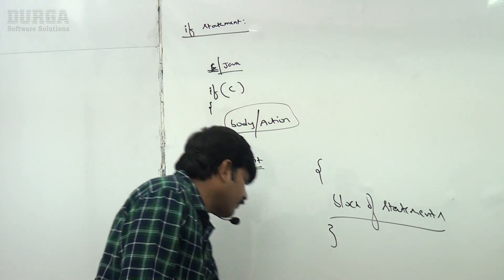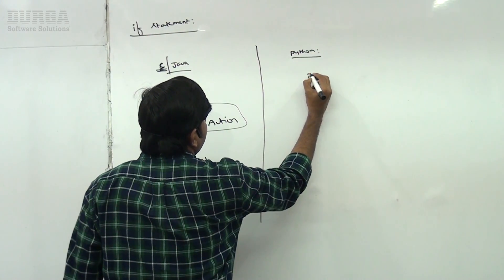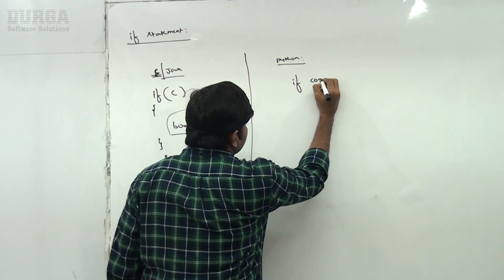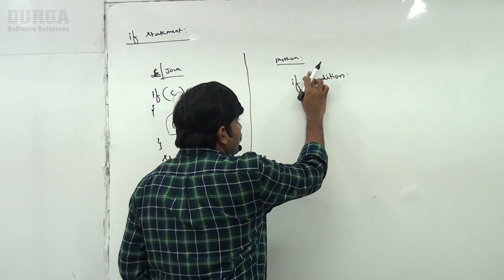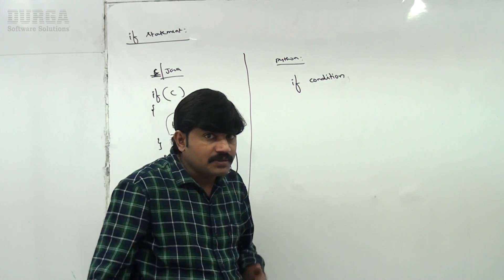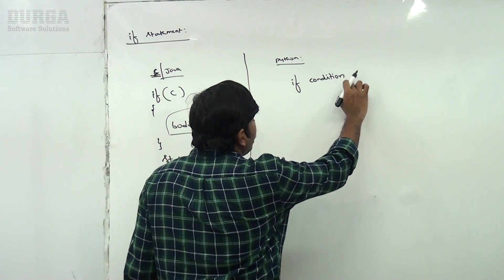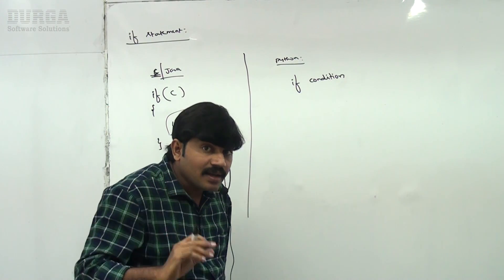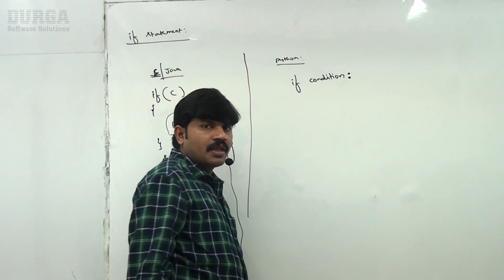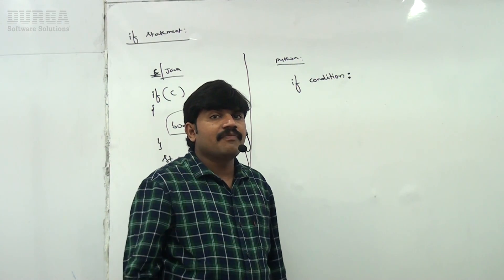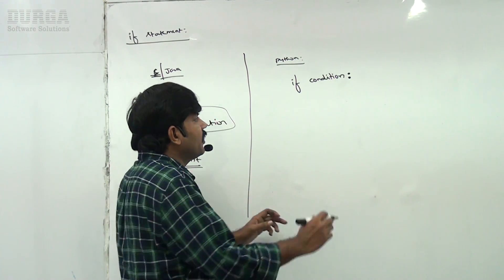In Python, curly braces are not used. To define an if block, write: if condition — parentheses are optional — followed by a colon. In Python, a colon means we are defining a block. After the colon, we define the block of statements.